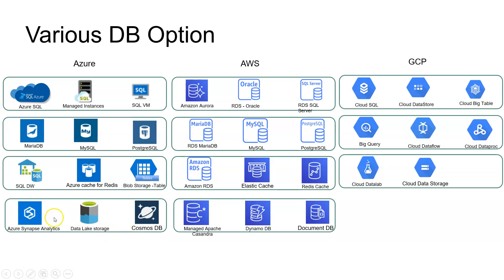Cosmos DB is a NoSQL database from Microsoft (Azure). Data Lake Storage and Azure Synapse Analytics can be used as part of your big data processing. SQL Data Warehouse is used for big data analytics, pulling data from many different databases across your enterprise. Azure Cache for Redis improves performance by loading data into cache as a key-value store. Blob Storage provides general and table storage options.